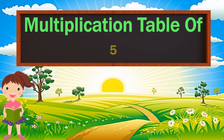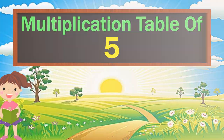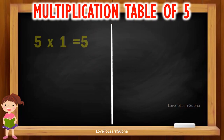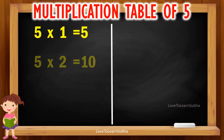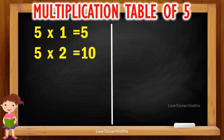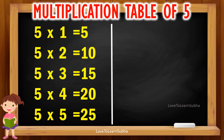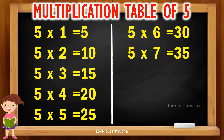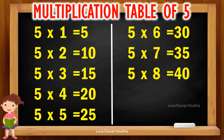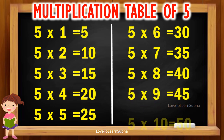Multiplication table of 5. 5 1s are 5, 5 2s are 10, 5 3s are 15, 5 4s are 20, 5 5s are 25, 5 6s are 30, 5 7s are 35, 5 8s are 40, 5 9s are 45, 5 10s are 50.